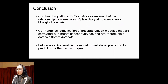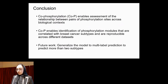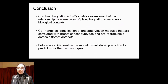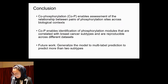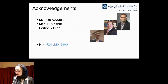In conclusion, we show that co-phosphorylation enables assessment of relationships between pairs of phosphorylation sites across biological contexts, and enables identification of modules correlated with subtypes that are reproducible. For future work, we want to generalize this to multi-label prediction to predict more subtypes and validate the approach in other datasets. I would like to thank my collaborators at Case Western Reserve University and NIH for supporting this research.